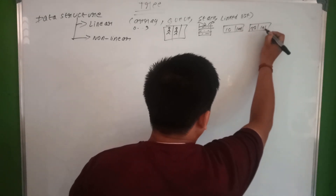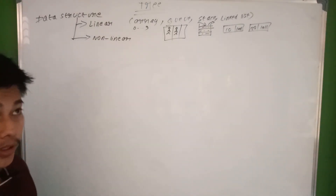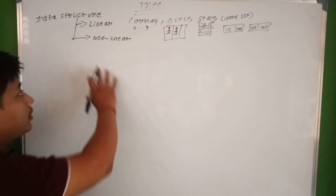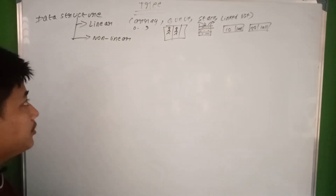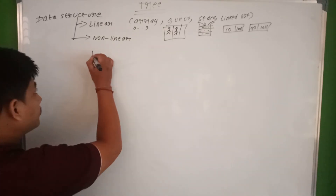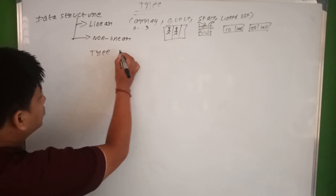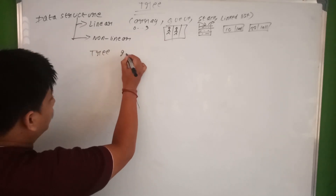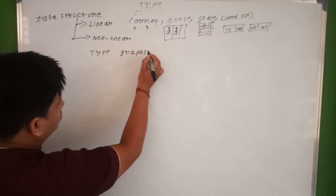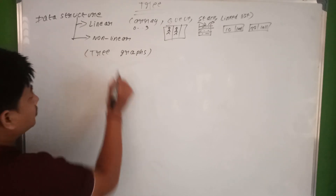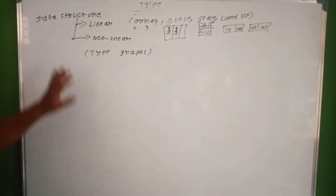The tree is a non-linear data structure. The value of the data structure is represented as a tree.